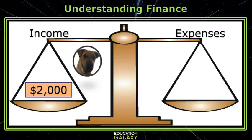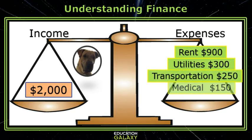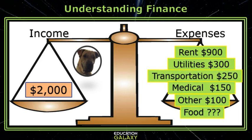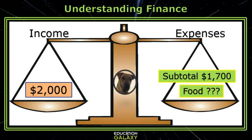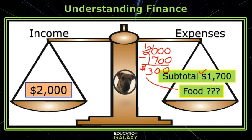Let's do some problems. Let's say that I have $2,000 in income and I have all of these expenses: rent, utilities, transportation, medical, other. And I want to know how much money I have for food this month. I first have to find out how much money is already designated in my expenses to see what I have left for food. If I add all of those expenses up, my subtotal is $1,700. So now I need to take my $2,000 and subtract the $1,700 that's essentially already spent, and that will give me my money left for food. So I have $300 left for food.